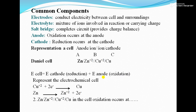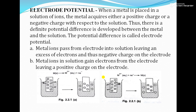Next is electrode potential. It is the electrical double layer generated at the metal surface in contact with a solution. When a metal is placed in a solution of its ions, the metal acquires either a positive or negative charge with respect to the solution, and a definite potential difference develops between the metal and the solution. This potential difference is called electrode potential.